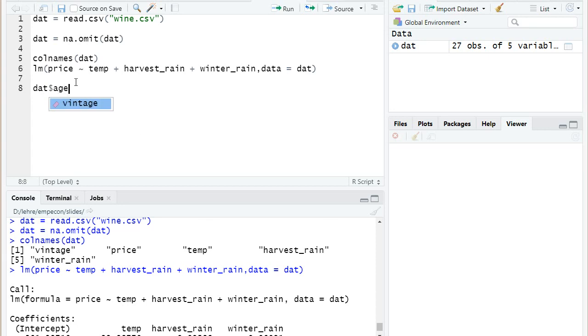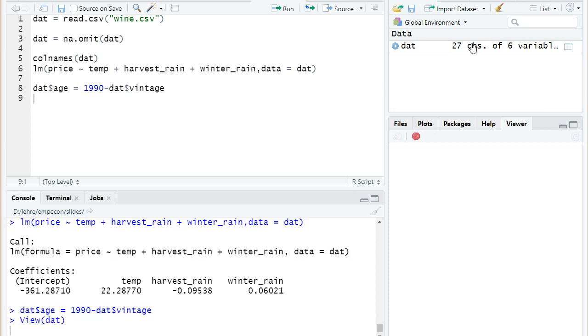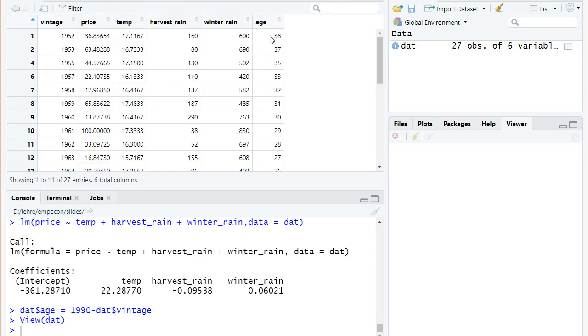We could use the dplyr mutate approach, or we can just use the base R syntax. So I add a new column to our data frame dat that shall be called age, and the age of a vintage is basically how old it was at the auctions in 1990. So I must compute 1990 minus the year when it was harvested, and that's exactly the vintage. Now I created this new column dat$age, and I can click on that here, and I see we have this new column age which gets smaller the younger the vintage is.